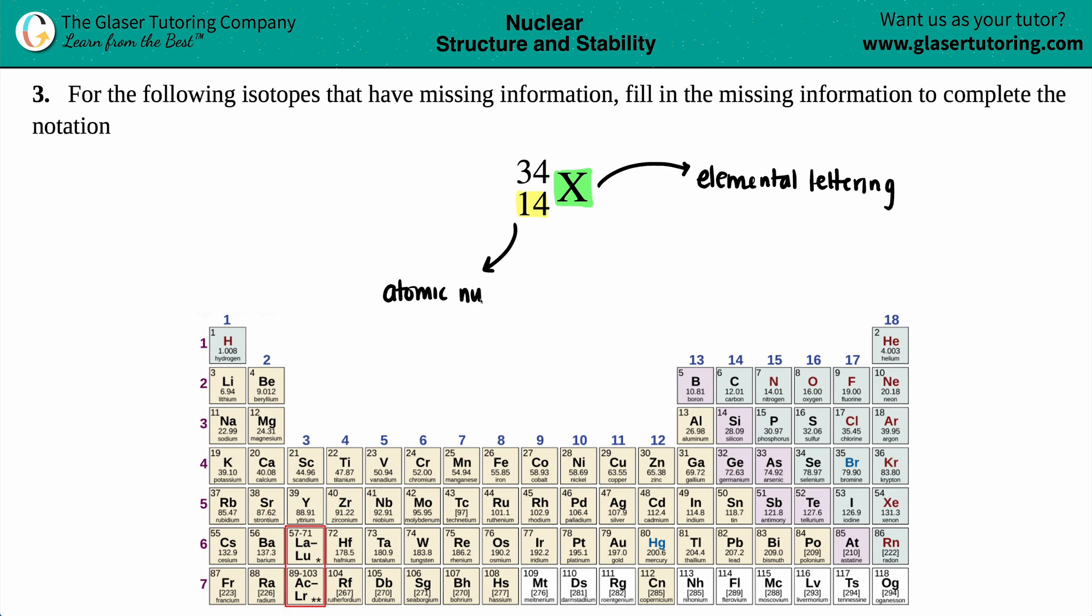The atomic number is never going to change for an element. On the flip side, the 34 can change because the number on the top is the mass number or atomic mass, and that can change depending on how many neutrons the element has. But the atomic number never changes.